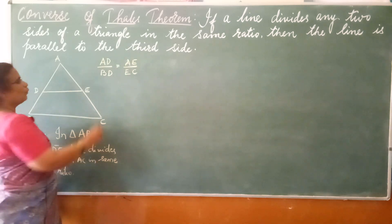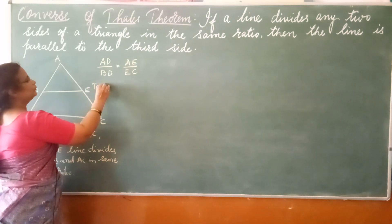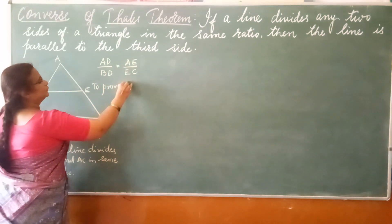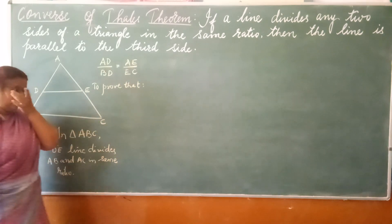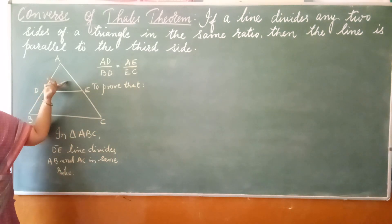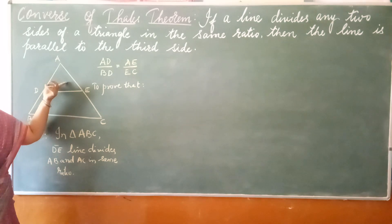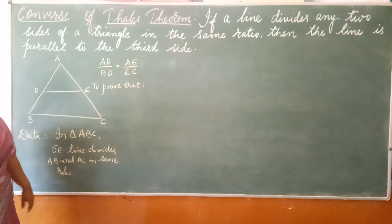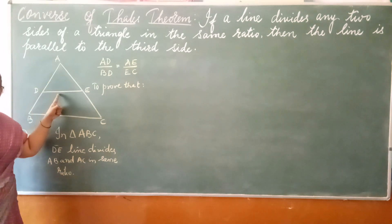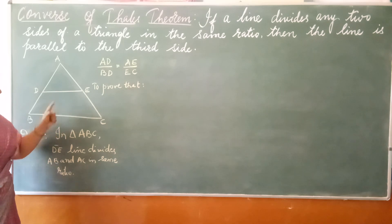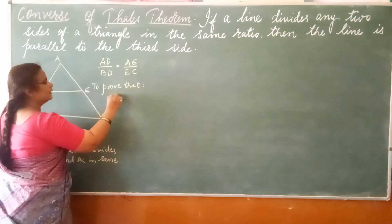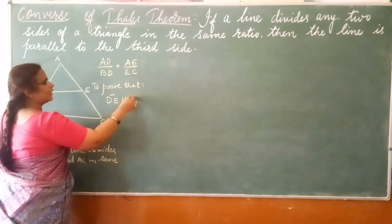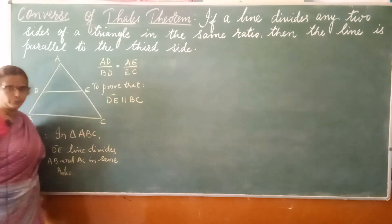Now what do we have to prove? To prove: if the line divides the other two sides in the same ratio, then this line must be parallel to the third side. That is, DE is parallel to BC — this is what we have to prove.